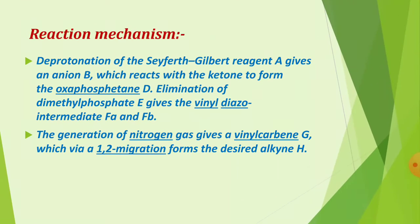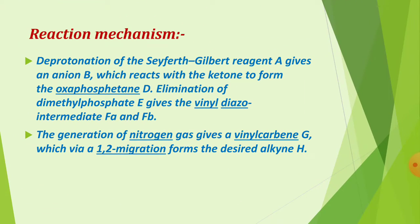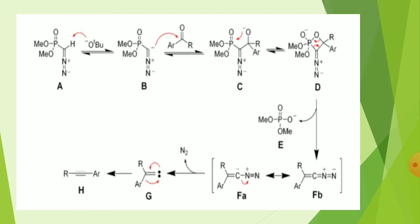The oxygen attacks phosphorus, forming the oxyphosphonate intermediate (C). Then in the next step, elimination of dimethyl phosphate occurs through rearrangement of the reagent. The vinyl diazo intermediate (F) is formed, which is unstable. Then a carbene intermediate (G) is formed as a more stable molecule.